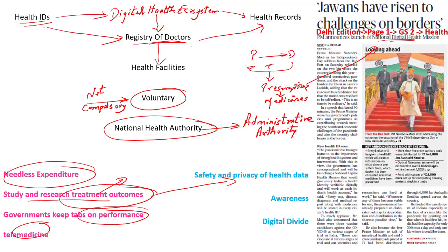However, there are also some concerns. One is with respect to the privacy of the health data. We have recently discussed that when it comes to COVID-19, the data with respect to patients has been going around. And when we look at past examples, other data has also been leaked as well. So if the data with respect to the National Digital Health Mission is leaked, the privacy of that person is violated — meaning Article 21, the right to live with dignity and privacy of that individual, will get violated.